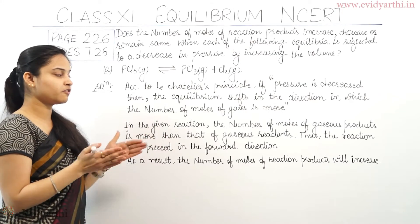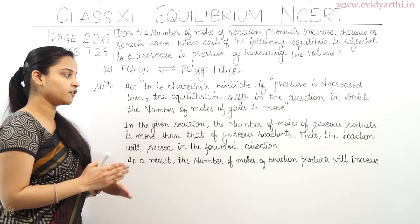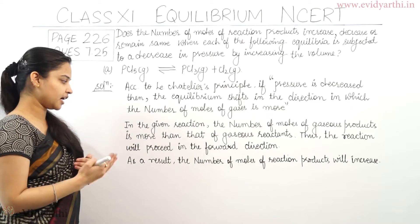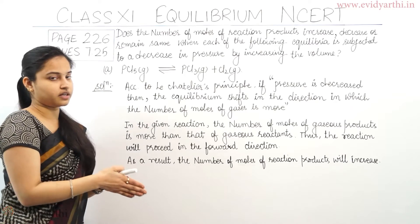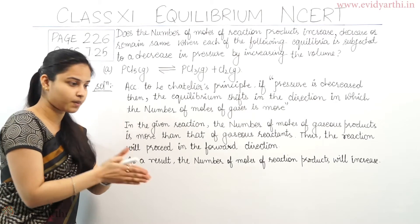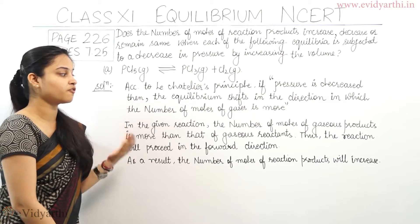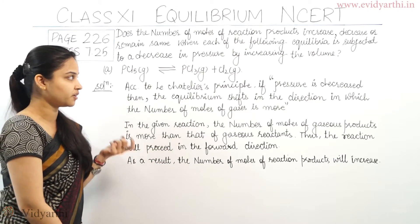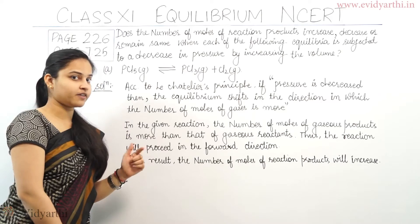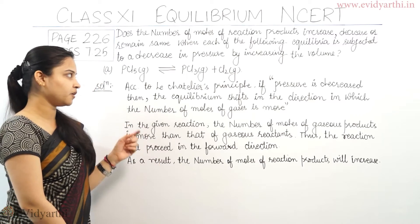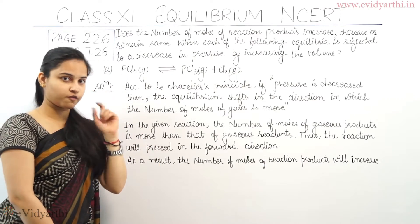In this reaction, the number of moles of gaseous product is more than that of gaseous reactant. Thus the reaction will proceed in the forward direction, and as a result the number of moles of reaction product will increase. That covers part A of this question.